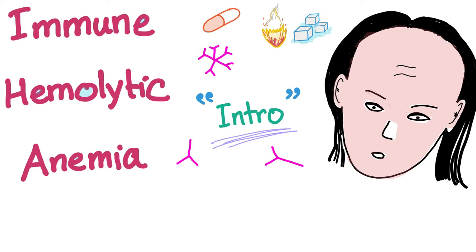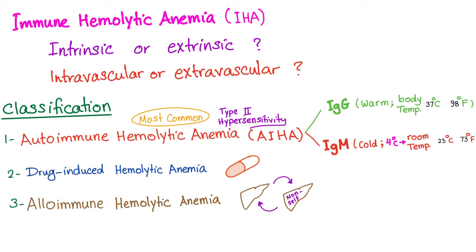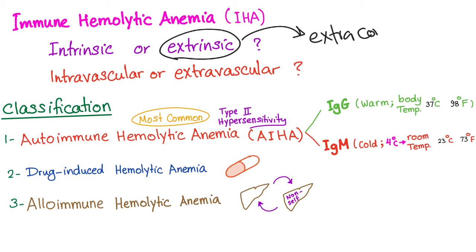This is a series in hematology and today's topic is immune hemolytic anemia — hemolysis due to an immunological process such as an antibody or complement. Immune hemolytic anemia is an extrinsic defect, meaning it comes from outside of the red blood cell, also known as extracorpuscular.